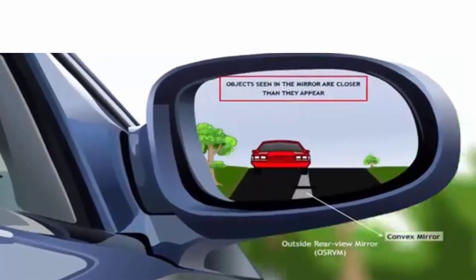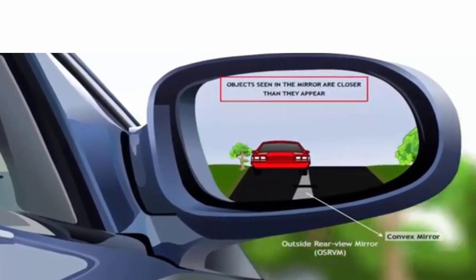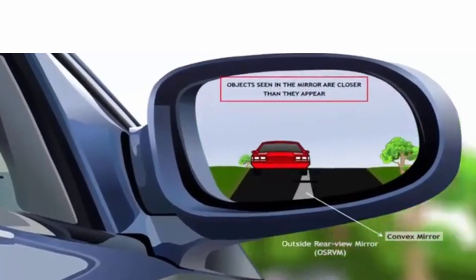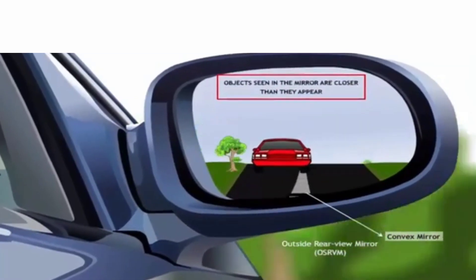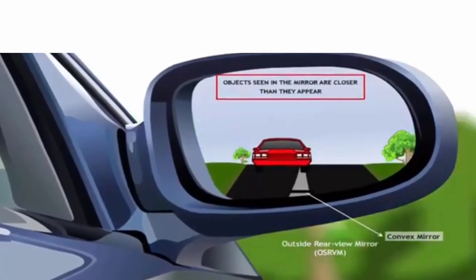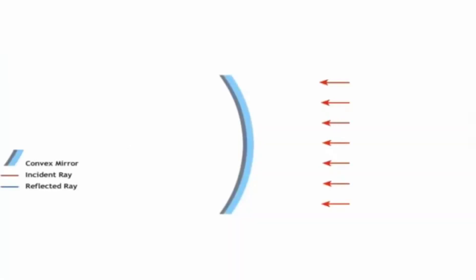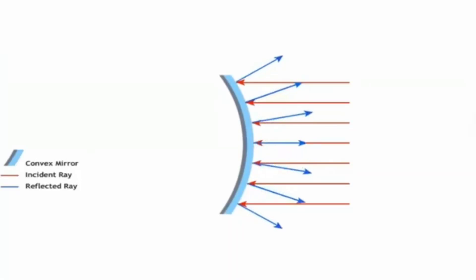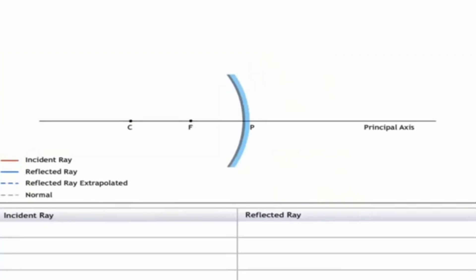We are all familiar with rear-view mirrors where it's written 'objects seen in the mirror are closer than they appear.' These are actually convex mirrors, used because they have a wide area. When a parallel beam of light falls on a convex mirror, the rays diverge, and that's why convex mirrors are known as diverging mirrors.